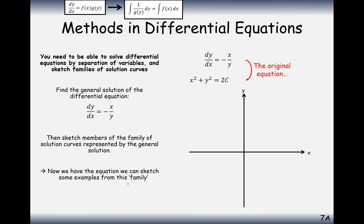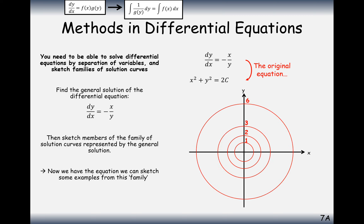Sketching the family of curves means taking a few different values for c and drawing a few different curves. We draw one curve when 2c equals 1, another when c equals 2 giving r equal to 2, and so on. Increasing or decreasing c moves the curves in or out. That's what it means to sketch a family of curves.